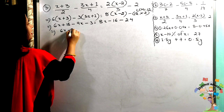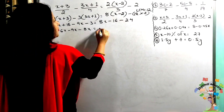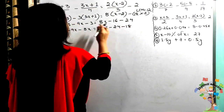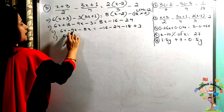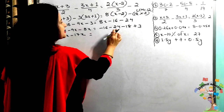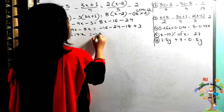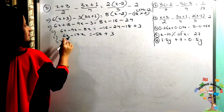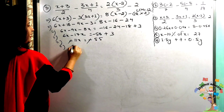Bringing x terms to the left: 6x − 9x − 8x. Moving constants: −16 − 24 stays on the right; +18 goes right becoming −18, and −3 goes right becoming +3. So 6x − 9x − 8x = −11x, and −16 − 24 − 18 + 3 = −55.